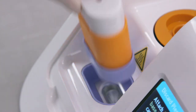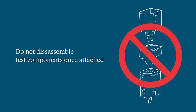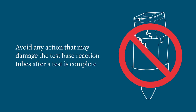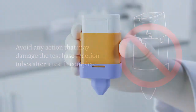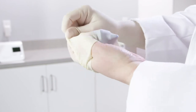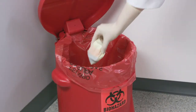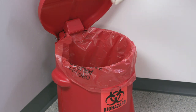Once all the pieces are connected, remove the test unit from the instrument and dispose of it according to federal, state, and local regulations. Do not disassemble test components once they are attached. Avoid any action that may damage the test base reaction tubes after a test is complete. It is advisable to wrap the assembled test unit into your glove, which provides an added barrier to avoid amplicon contamination. Make certain that placing the test components in the hazardous waste container does not separate the test components. You must avoid damage even after disposal. Never step on the unit or forcefully compact the waste container.